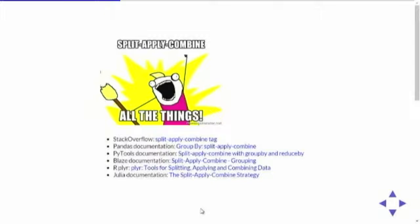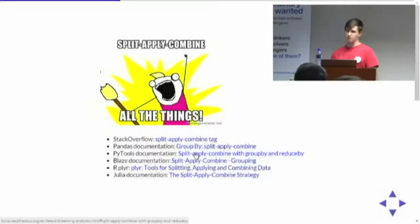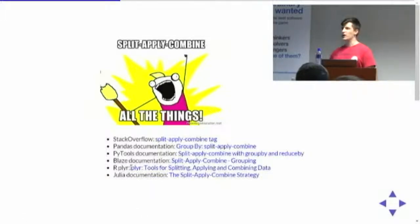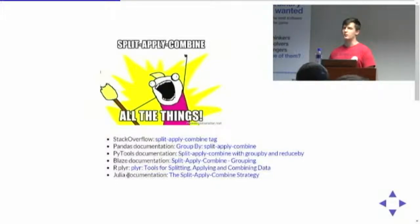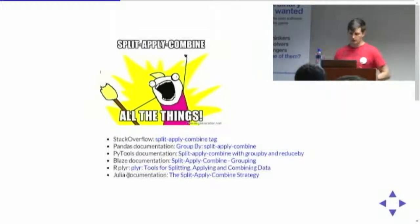Since then it's kind of seen copying up everywhere. It's got its own tag on Stack Overflow, the Pandas documentation has a dedicated page, the PyTools package has a dedicated section, the Blaze documentation does too, R has a multitude of packages, and Julia — which is a new hot data processing language — also has a whole section on split-apply-combine. It's really popping up everywhere, and it's one of the basic workflows in processing large data sets.